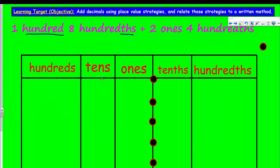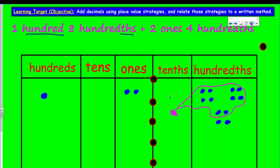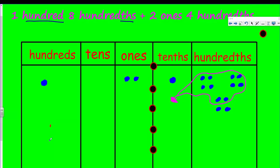Let's go on to the next problem. We have one hundred, so we're definitely going to need to show that in the column of hundreds. We also have eight hundredths — I'm going to do four and four. Now I have eight hundredths. I also have two ones, and then I also have four hundredths. I have four, eight, twelve of them. That exceeds the ten that we group in each place value, so I'm going to need to rename some of those and move them into the tenths column by grouping them by ten. So we have ten, giving us one tenth over here. We have one hundred, zero tens, two ones, one tenth, and it looks like two hundredths. The number should be one hundred two and twelve hundredths.